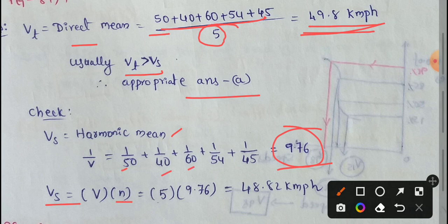We have 5 observations: 50, 40, 60, 54, 45. So 9.76 times 5 equals 48.82 km per hour.